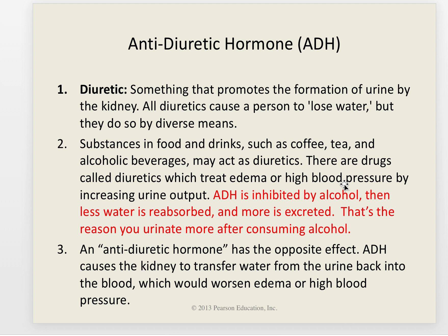A diuretic promotes urine formation, causing a person to lose water. Examples include coffee, tea, alcohol, and certain drugs. Diuretics are often used to treat edema or high blood pressure by increasing urine output. ADH is inhibited by alcohol, meaning less water is reabsorbed and more is excreted — that's why you urinate more after consuming alcohol. Antidiuretic hormone has the opposite effect, causing the kidneys to transfer water from urine back to the blood.